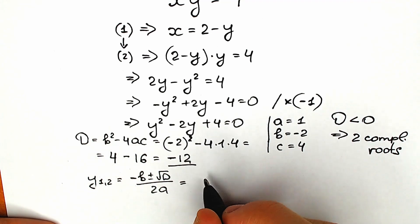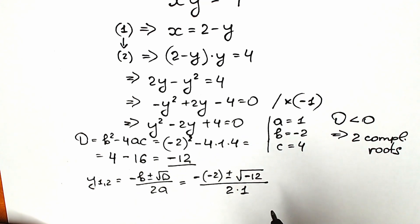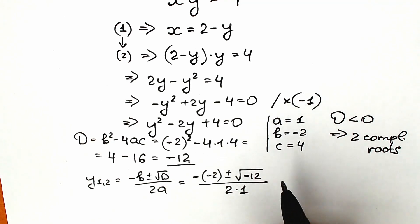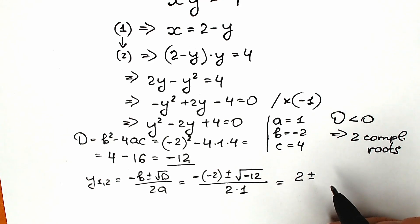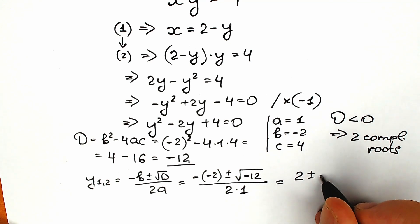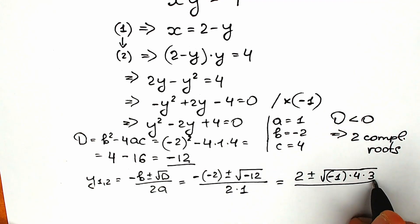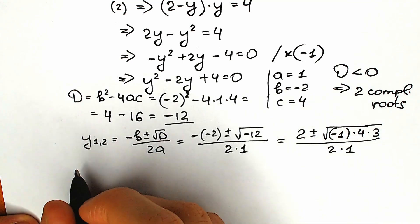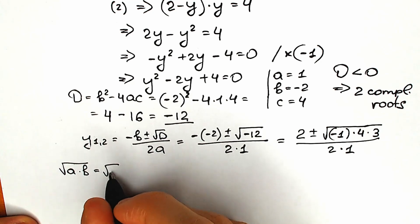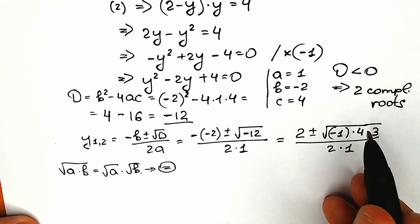Let's simplify: minus(minus 2) gives us 2. We need the square root of minus 12. We can write it as square root of minus 1 times 4 times 3, and split it using the property that square root of a times b equals square root of a times square root of b. So we get square root of minus 1 times square root of 4 times square root of 3.